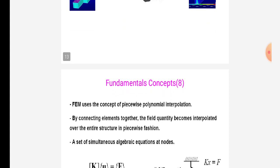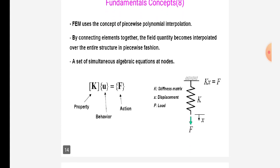FEM uses the concept of piecewise polynomial interpolation. By connecting elements together, the field quantity becomes interpolated over the entire structure in piecewise fashion. A set of simultaneous algebraic equations at nodes. Like, K is given stiffness matrix, X is given displacement, F is given load.